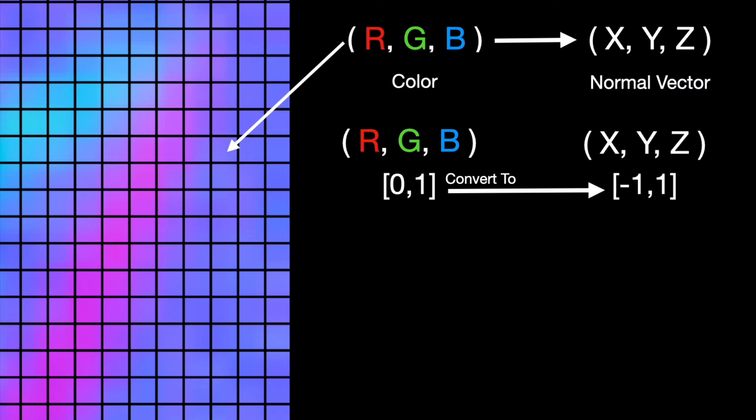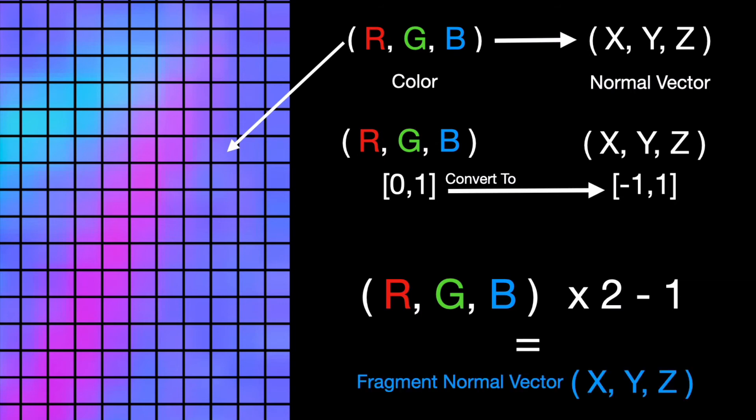If we want to convert that, how the heck do we do that? That sounds pretty complicated. It's not. It's really, really simple. To convert from RGB to this X, Y, Z vector, all we have to do is take our color that we've sampled from that normal map, multiply it by two, and subtract one. And holy hell, we get a fragment normal vector.